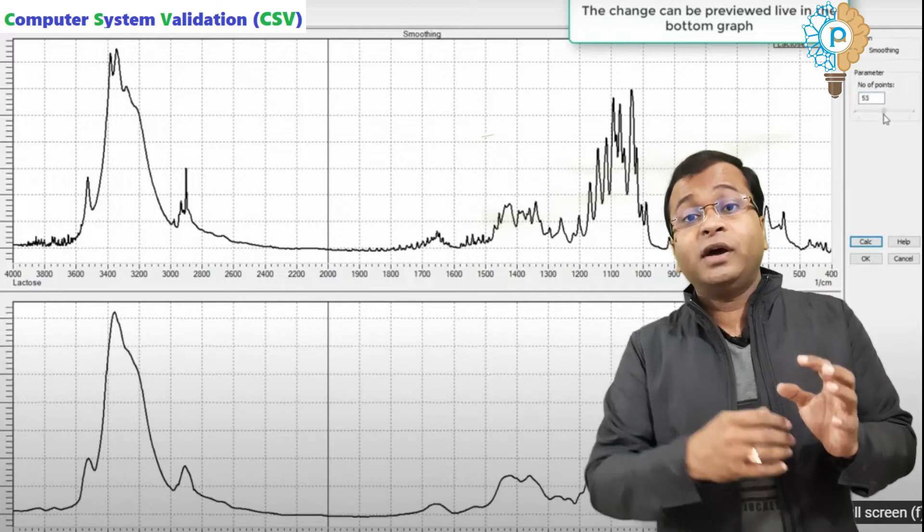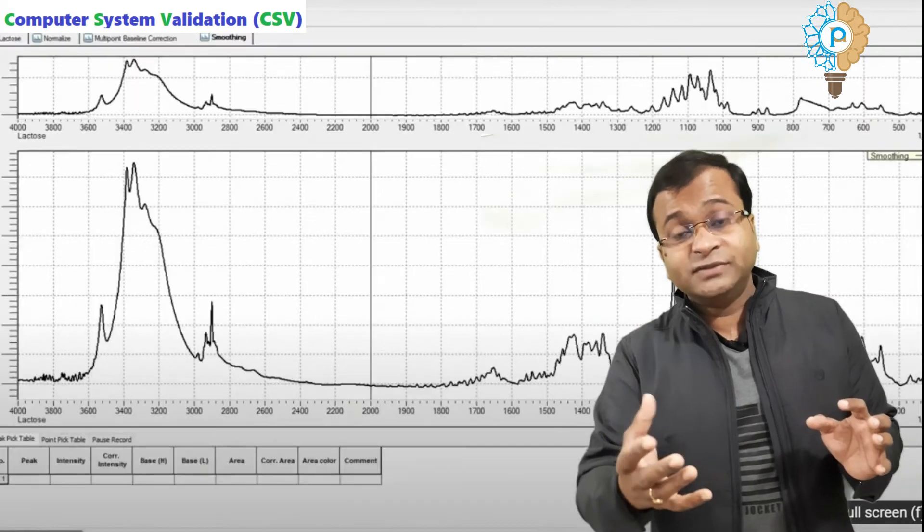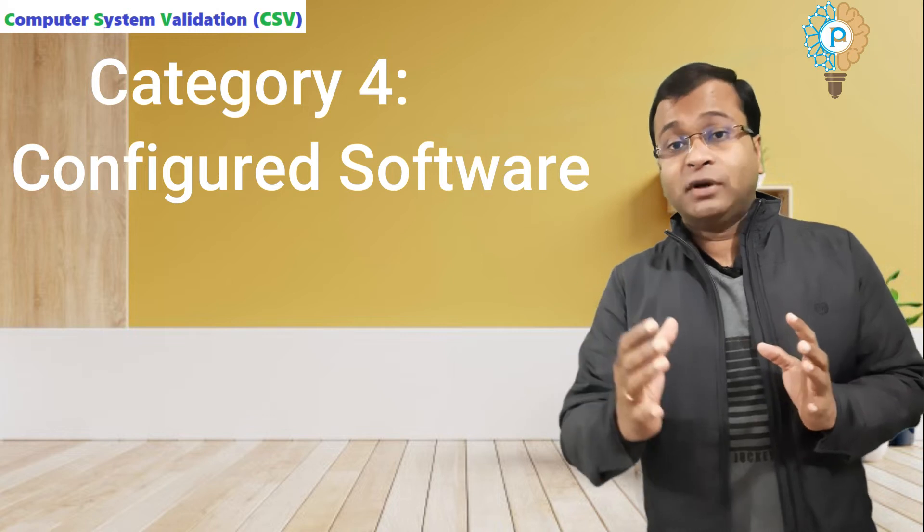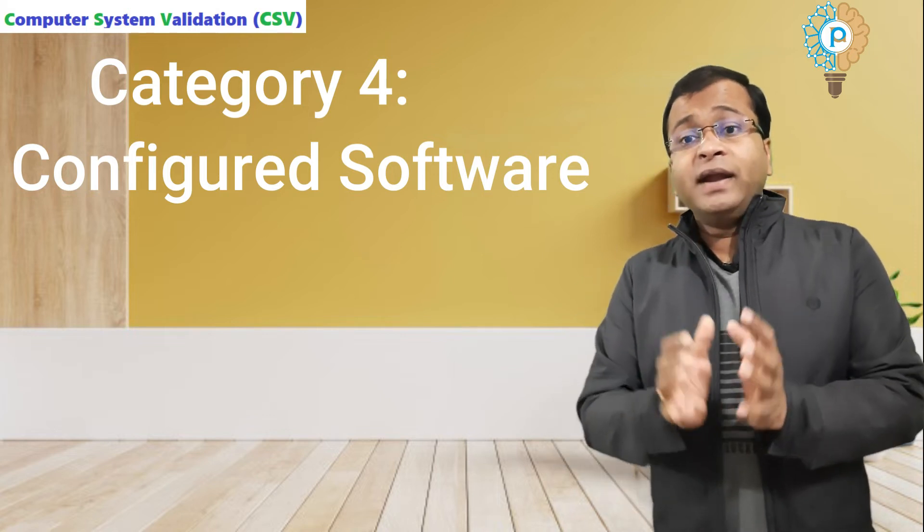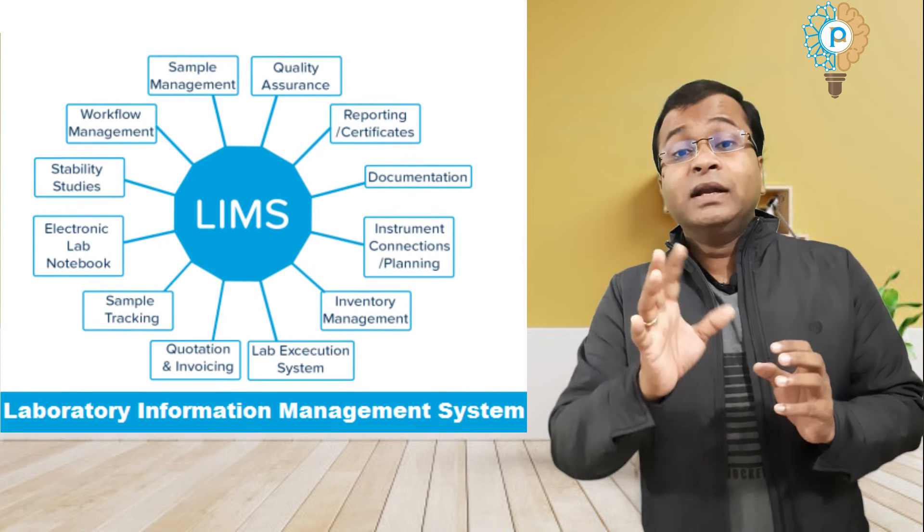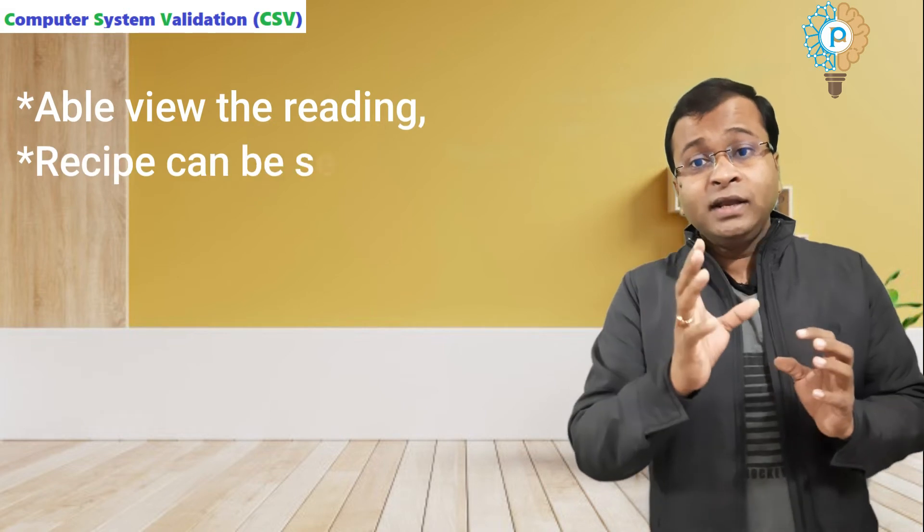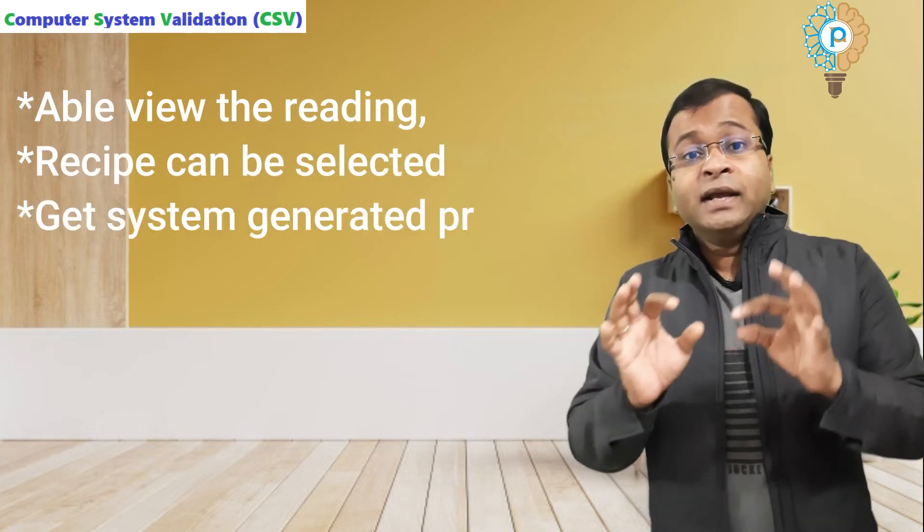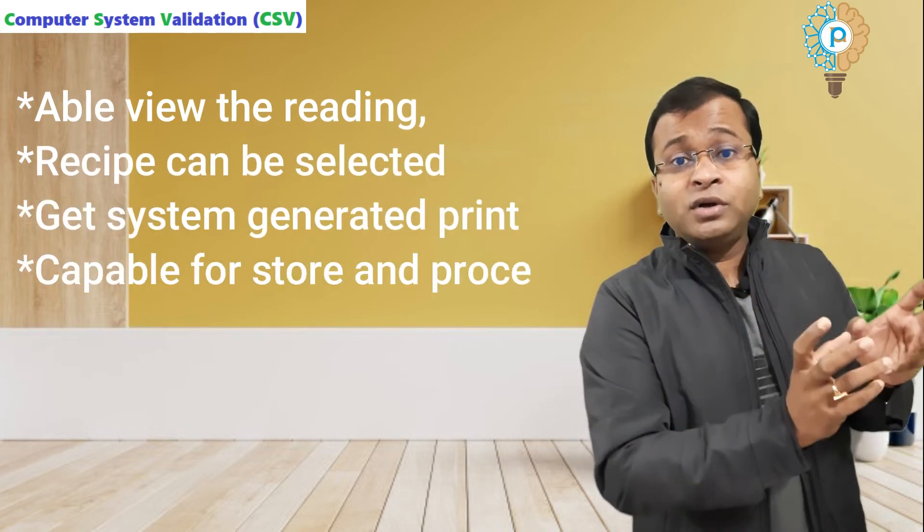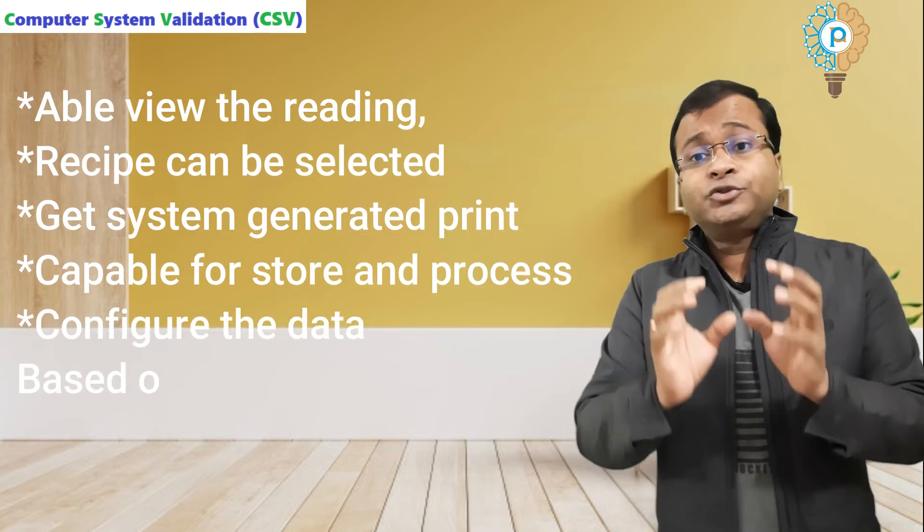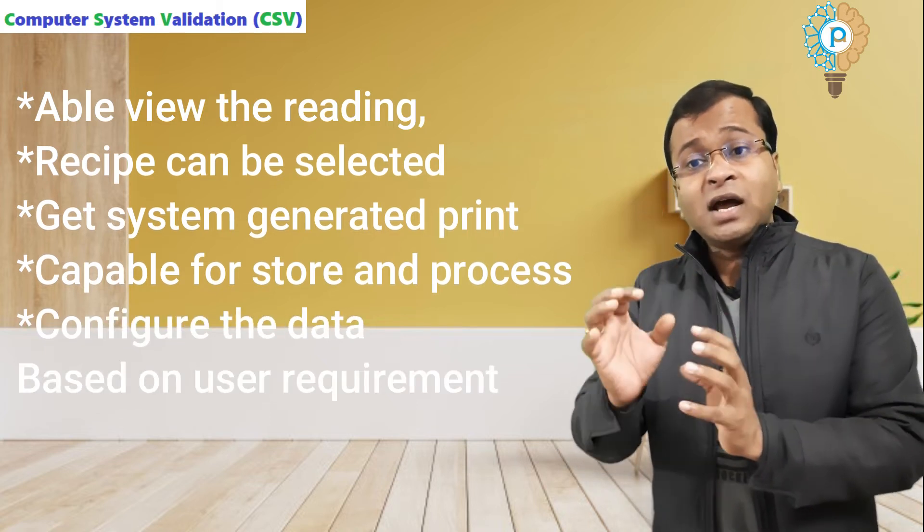Category 4 is configured software. Here, the guideline describes software applications which are configured to meet the specifications of business requirements. Examples include LIMS, SCADA, DCS, CDS, etc., where you can view the reading, recipe can be selected, get the system-generated printout, and are capable of storing and processing the data and configuring the data based on user requirements.